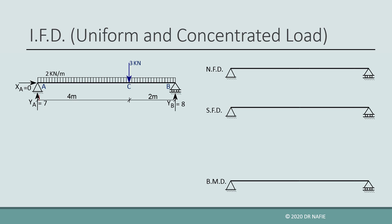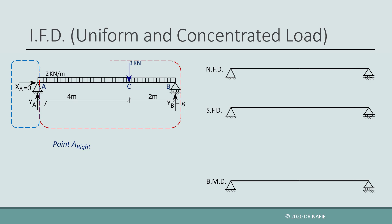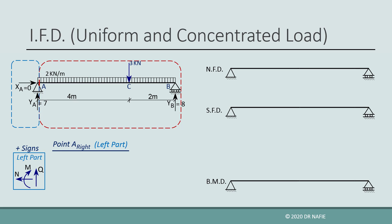We start at point A by evaluating the internal forces just to the right of point A. As detailed in a previous lecture, we calculate the internal forces at a point by dividing the beam into two parts at that point and using the forces in only one of the two parts. We are free to use either the left or right part, but the sign convention for the left part is opposite to that of the right part. For the current point, we will work on the left part and display its sign convention for reference.